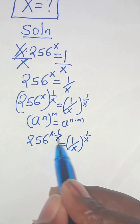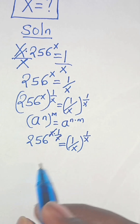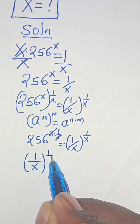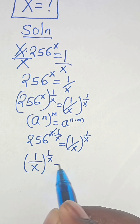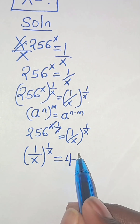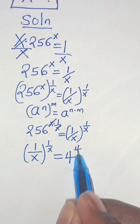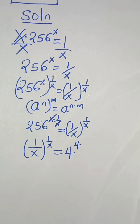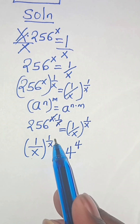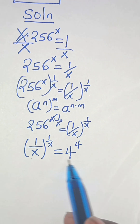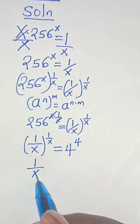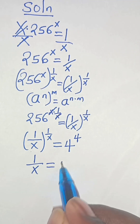Simplifying, we get 256 raised to the power of 1, which equals 1 over x raised to the power of 1 over x. Now 256 is the same as 4 to the power of 4. The base and exponent on both sides match, so 1 over x equals 4.